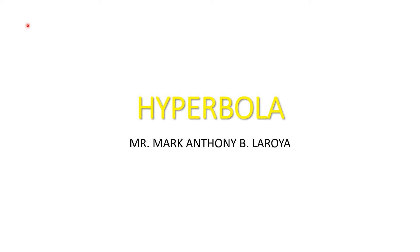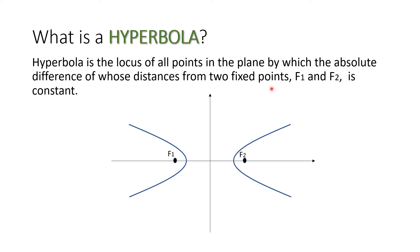Hello everyone. I am here again to discuss another topic in analytic geometry, and this time I will be discussing hyperbola with center at the point of origin, or (0, 0). I am your teacher, Mr. Mark Anthony Laroya. So let us first define what a hyperbola is. A hyperbola is the locus of all points in the plane for which the absolute difference of whose distances from two fixed points, F1 and F2 — those are the foci — is constant.